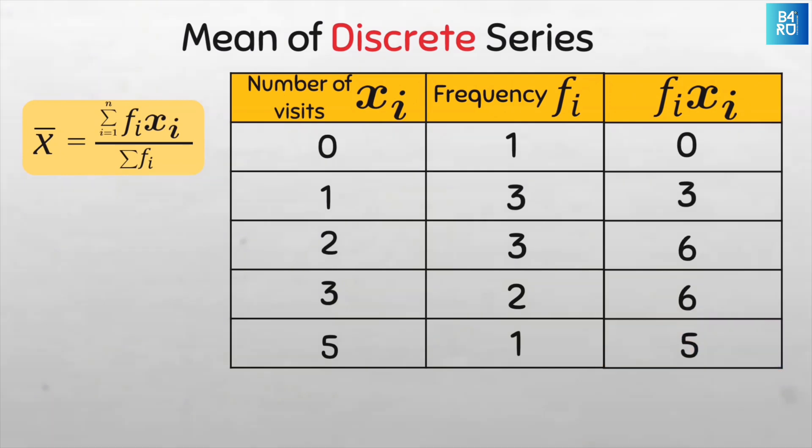Now going by the formula, we need to sum all of these to get the sum of f of x, which is our numerator. Adding all this together, we will have 20.